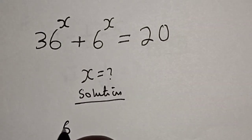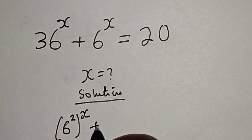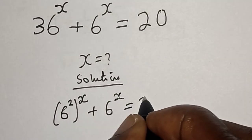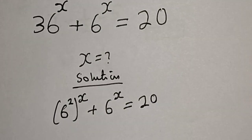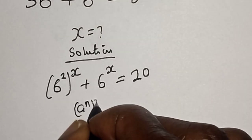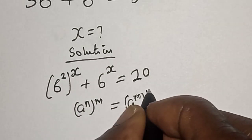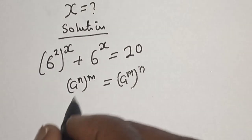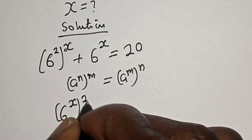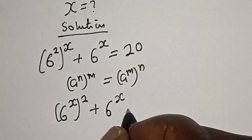Solution: 36 raised to power s can be written as 6 squared raised to power s, plus 6 raised to power s is equal to 20. Remember this exponential rule: a raised to power n raised to power m is equal to a raised to power m raised to power n.